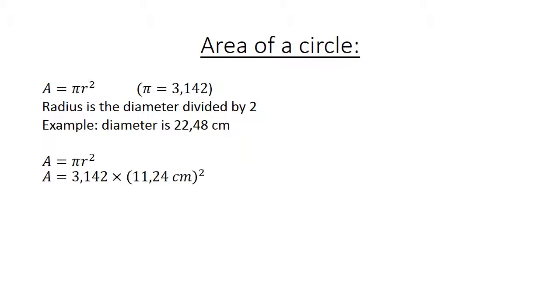Area equals 3.142 times 11.24 centimeters squared equals 3.142 times 126.3376 centimeters squared equals 196.9527392 centimeters squared. And if we round it to 2 decimals, 196.95 centimeters squared.